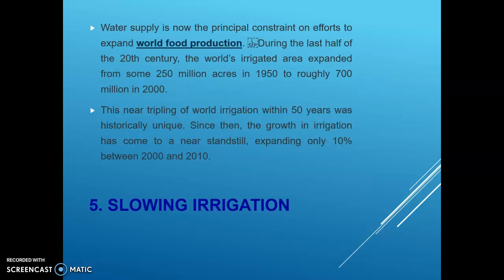Challenge number 5 is slowing irrigation. Water supply is now the principal constraint on efforts to expand world food production. During the last half of the 20th century, the world's irrigated area expanded from some 250 million acres in 1950 to roughly 700 million in 2000. This near tripling of world irrigation within 50 years was historically unique. Since then, the growth in irrigation has come to a near standstill, expanding only 10% between 2000 and 2010.